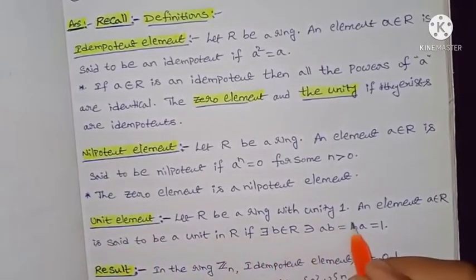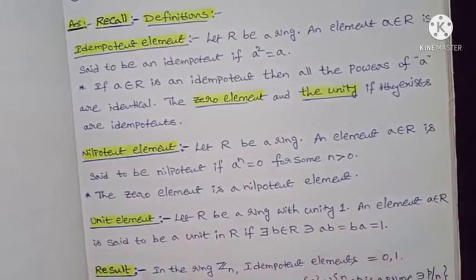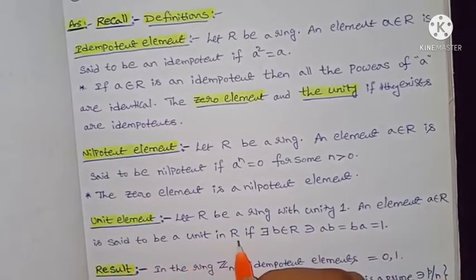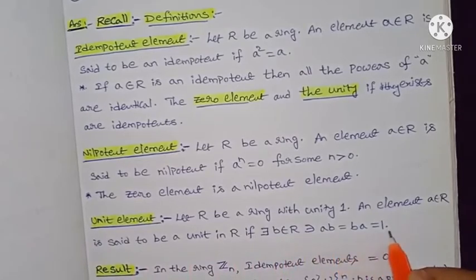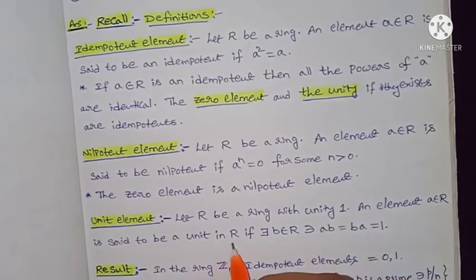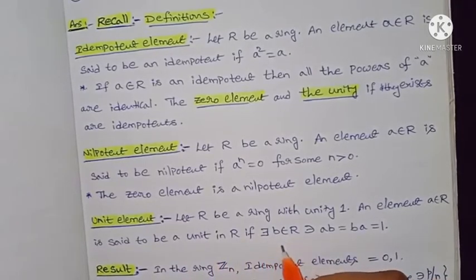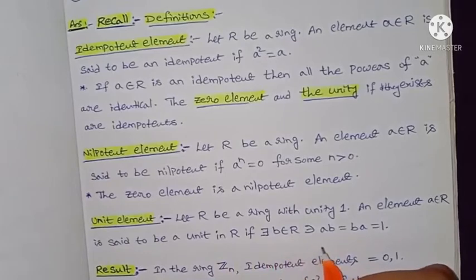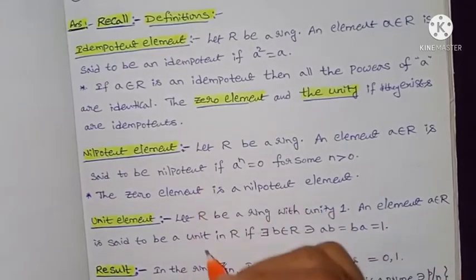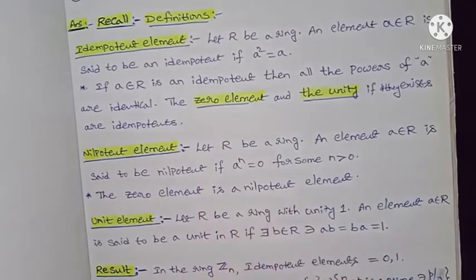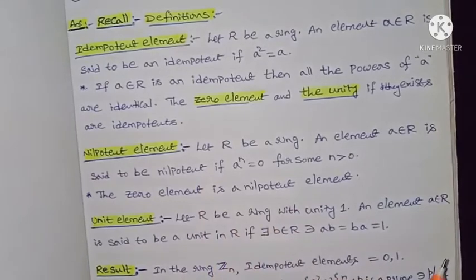Next, the unit element definition: let R be a ring with unity, meaning 1 belongs to R. An element a belonging to R is said to be a unit in R if there exists an element b belonging to R such that ab equals ba equals 1. A unit is essentially an invertible element.